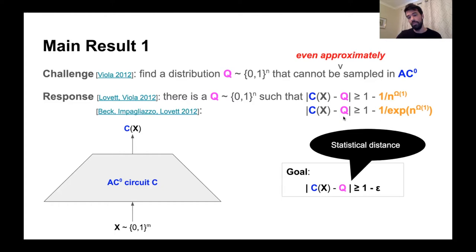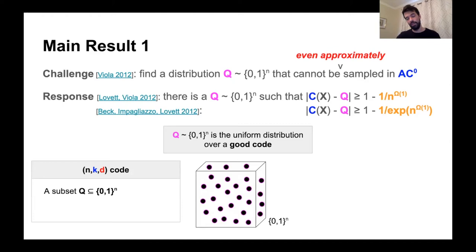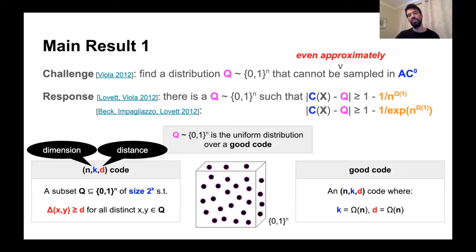It turns out this was a very natural distribution — the uniform distribution over any good code. A code, or an (N, K, D) code, is a subset of bit strings of length N with size 2^K, giving the guarantee that for any two distinct strings in this subset the Hamming distance between them is at least D. We refer to D as the distance and K as the dimension of the code. A good code is an (N, K, D) code with constant relative dimension and constant relative distance.